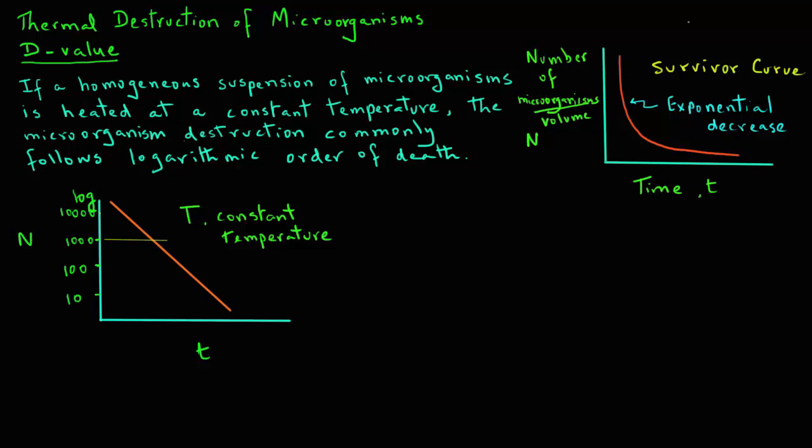The time required for one log cycle reduction, as we see here in this plot, is called the D value. Note that this D value is obtained from the x-axis, where the units are of time.